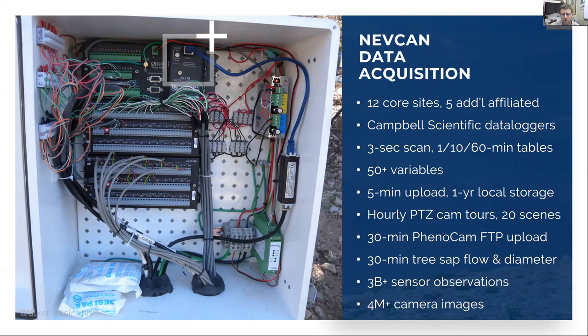Should the network go down, we have over a year of local storage for all of the tables on board the data loggers. We also have cameras that are pan-tilt zoom that every hour in the daylight rotate around and take a picture of 20 different scenes, including the cardinal directions, instruments, and items of interest on the sites. We're also connected to the National Phenology Camera Network that the Harvard Forest, Harvard University, University of New Hampshire group has been maintaining — we have four of those cameras on the network right now.